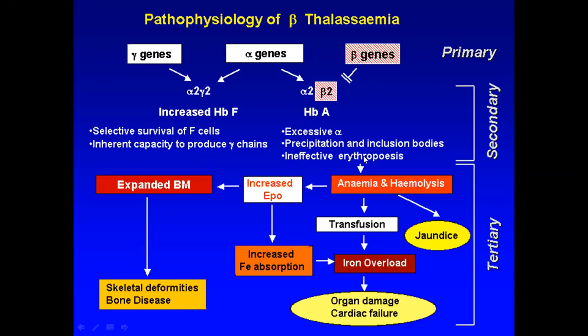Due to the presence of these excess alpha globins, they form toxic aggregates. These aggregates precipitate and form inclusion bodies which are toxic to the cell membrane. These cells also get hemolyzed as they are formed within the bone marrow. When cells are destroyed during their production within the bone marrow, it is called ineffective hematopoiesis.